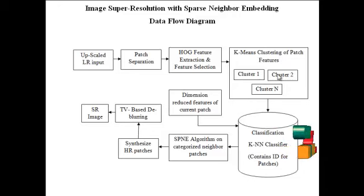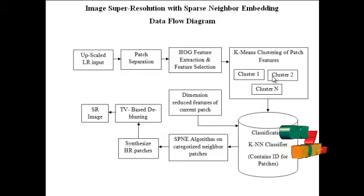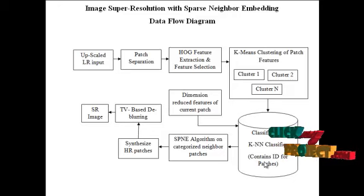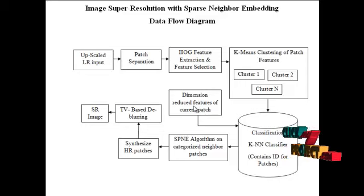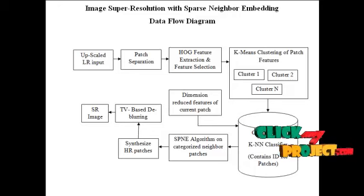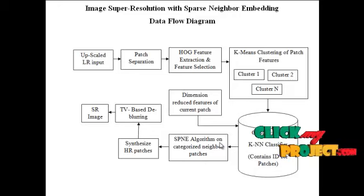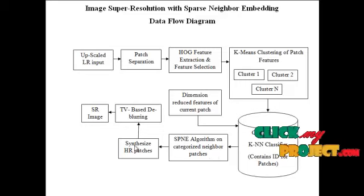The number of clusters is 3, though it can be increased. Each patch is assigned an ID by the K-means clustering algorithm. Depending upon the ID, the KNN classifier will be trained, with the patch IDs serving as the true labels. This classifier output will be subjected to the dimension-reduced features of the correct patch — the patch to be synthesized is dimensionally reduced and then assigned a cluster identity. The patch to be synthesized is then subjected to the SP-NE algorithm, which synthesizes the LR patch into an HR patch.